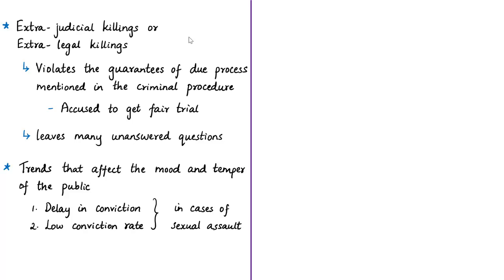If an extrajudicial killing occurs, it is easy for police to claim it was an encounter to the public but very hard to prove in court. The author calls extrajudicial killings illegal because they violate due process guarantees, including the right of every accused to a fair trial. Moreover, if other persons were involved in the crime, now that the accused are dead, no one can know who the real culprits are or whether there were additional perpetrators behind the assault.